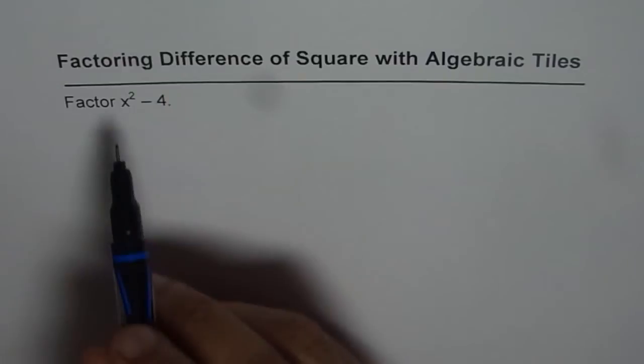Let us further explore factoring difference of squares with algebraic tiles. We need to factor this time x squared minus 4.